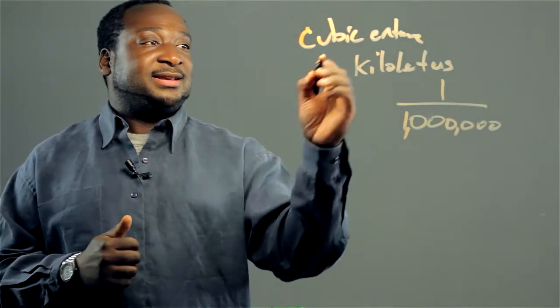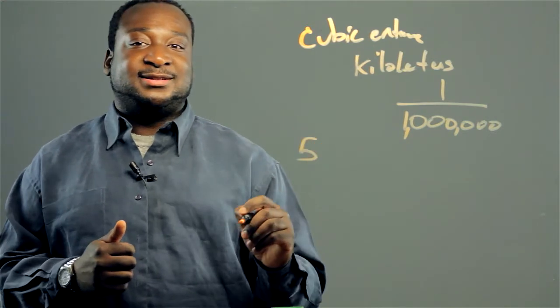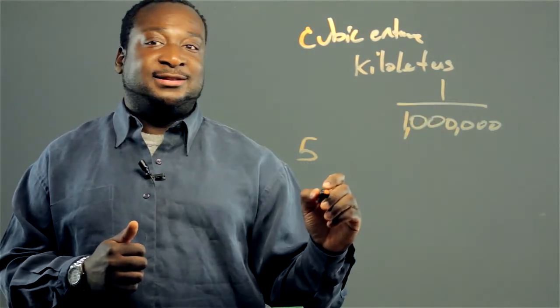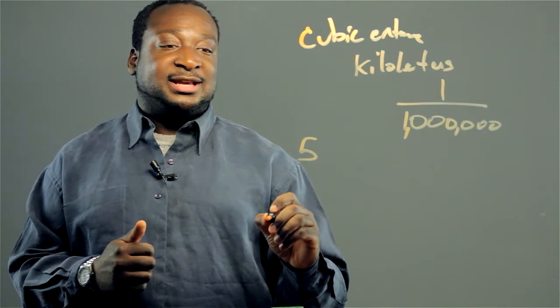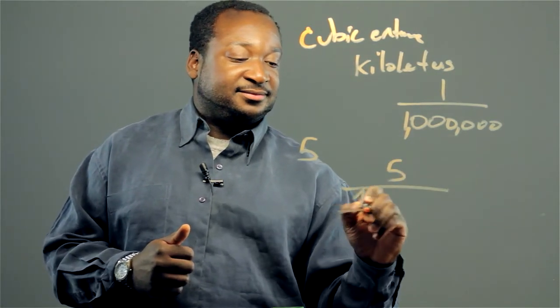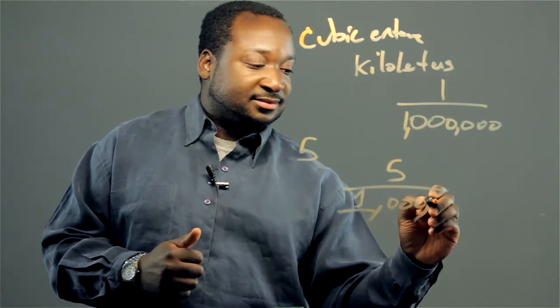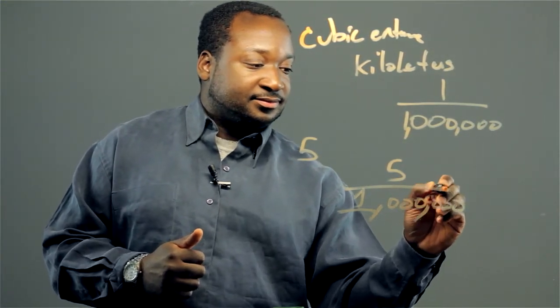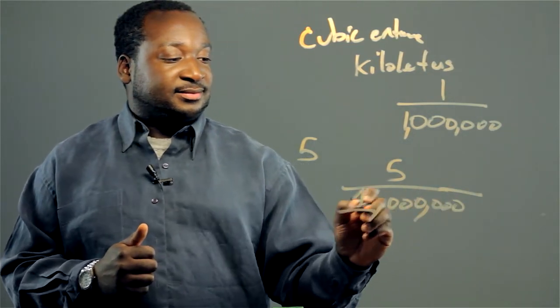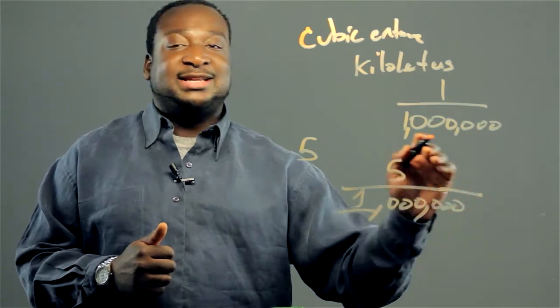So if you want to convert five cubic centimeters to kiloliters, that will be five over one million, or it can also be written as 10 to the sixth.